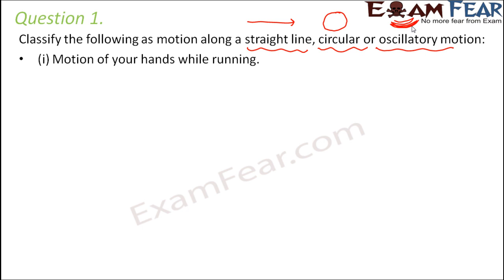Motion of your hands while running. So when you run, what happens to your hands? They do not move along a straight path. They just come forward, goes backward, forward, backward. So it is like a periodic motion. So it is like an oscillatory motion.